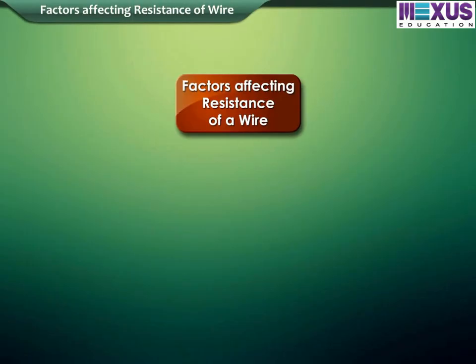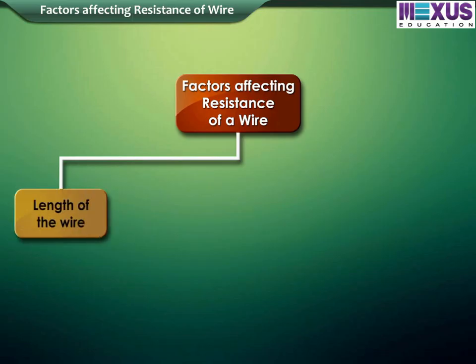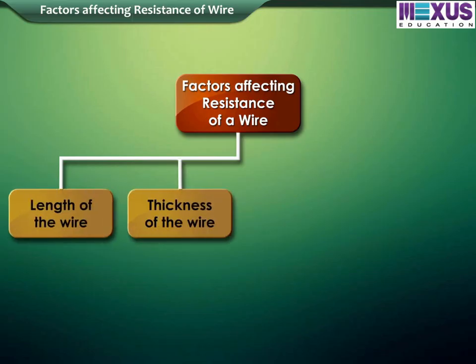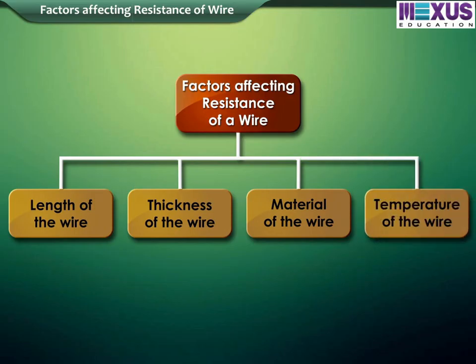The resistance of a wire depends on 4 factors: length of the wire, thickness of the wire, material of the wire, and temperature of the wire.